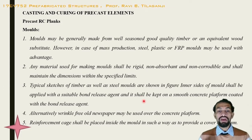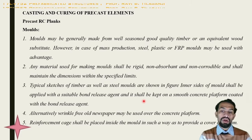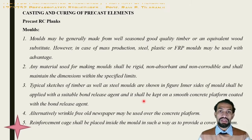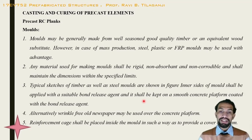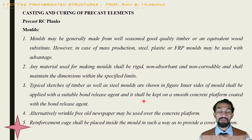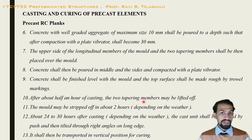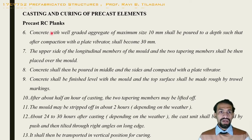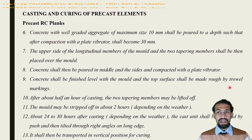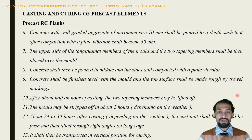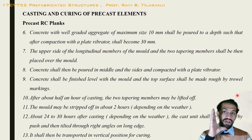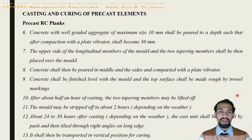Alternatively, wrinkle-free old newspaper may be used on a concrete platform to avoid any wrinkle on the inner surface. The reinforcement cage shall be placed inside the mould with a 15 mm cover maintained. For RCC planks, well-graded aggregate of maximum size 10 mm shall be poured to a depth such that after compaction with a plate vibrator, the thickness becomes 30 mm.